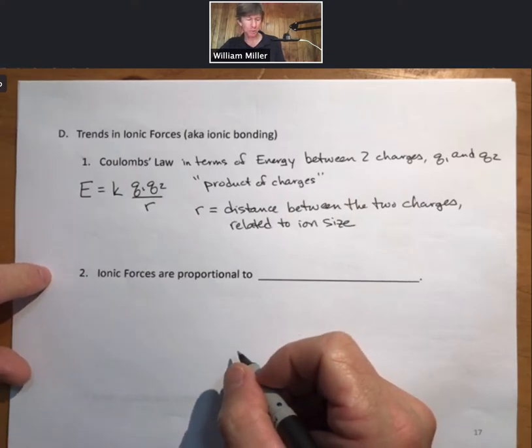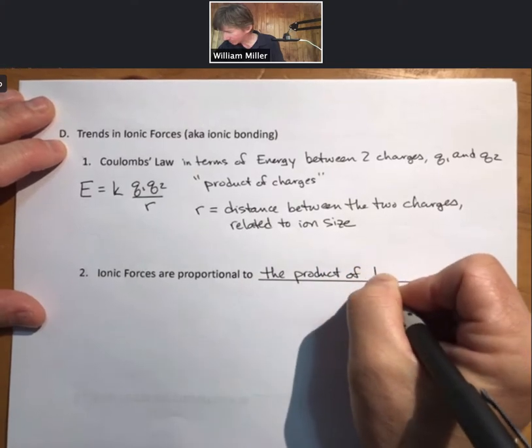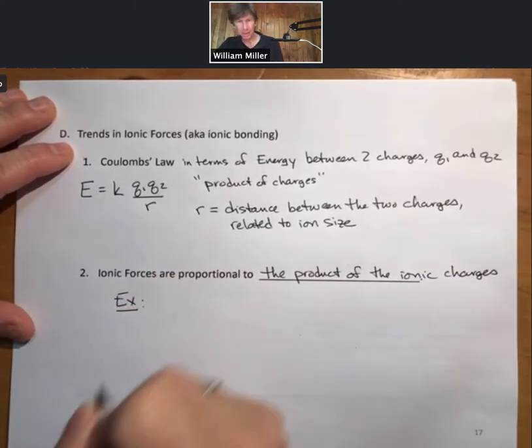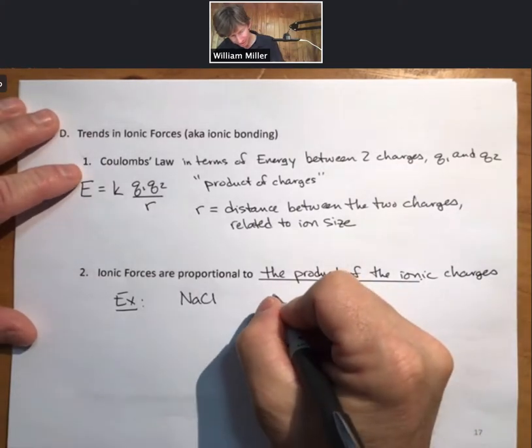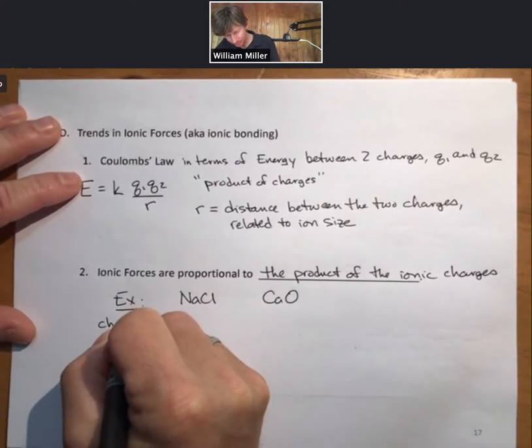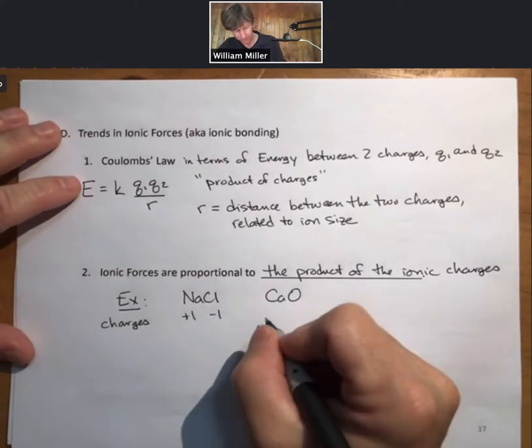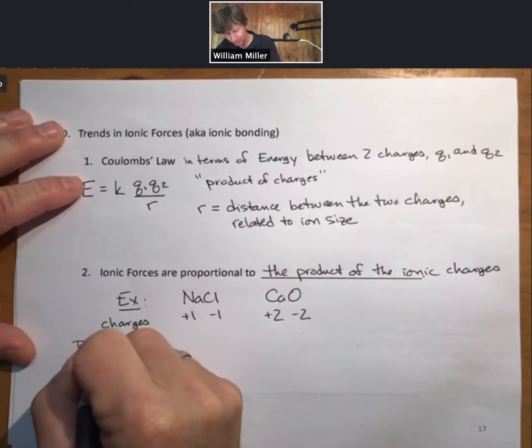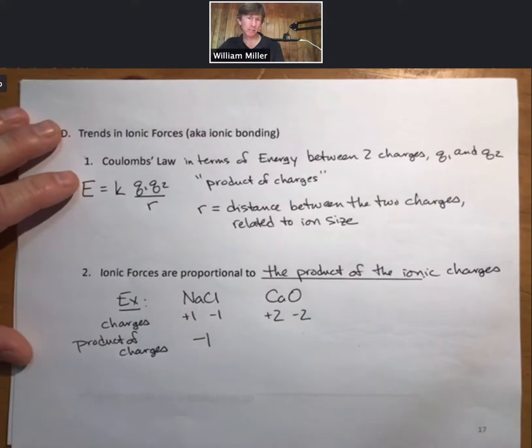Distance between two charges will be related to ion size for us. First trend now, ionic forces are proportional to the product of the ionic charges. As an example of this, we might think of sodium chloride as compared to calcium oxide. If we looked at the charges, sodium is plus 1, chloride is minus 1. Calcium plus 2, oxide minus 2.